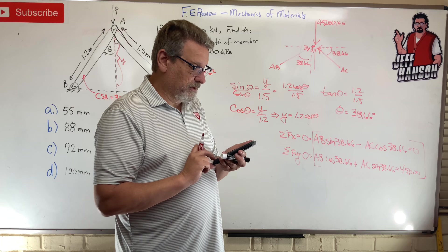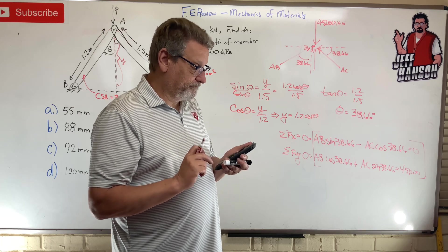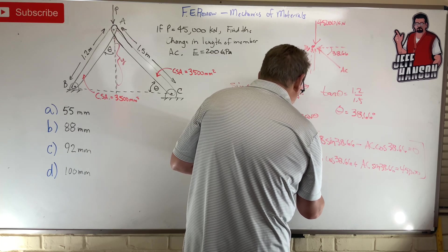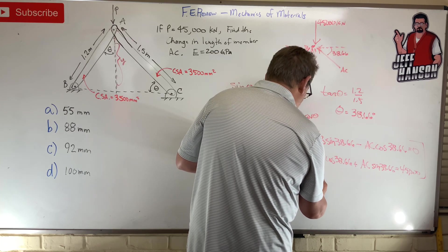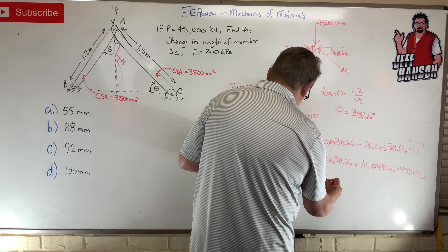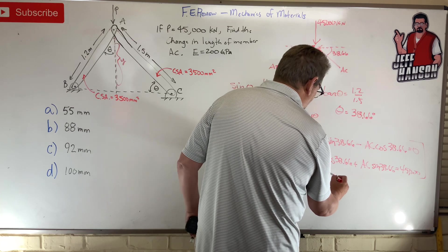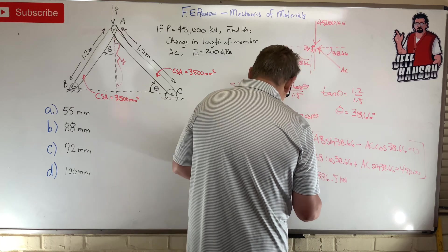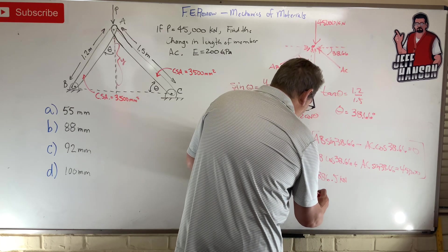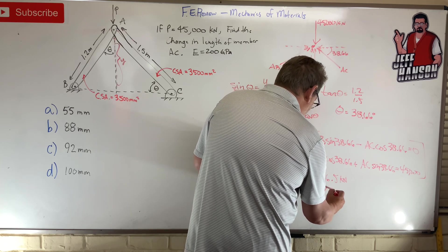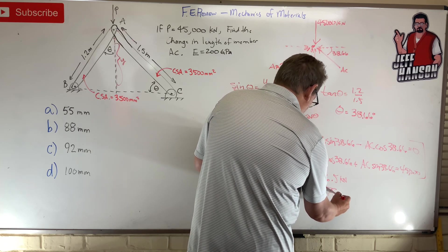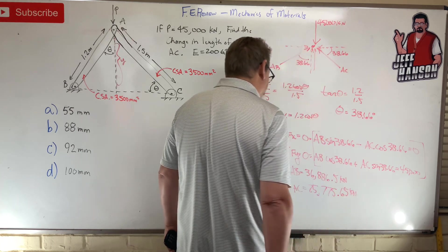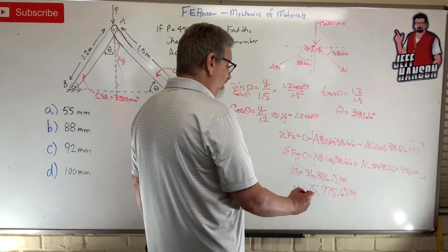And I get solve. Does the math for me. It says that AB is equal to 36,886.5 kilonewtons. And then AC is equal to 25,775.65 kilonewtons.